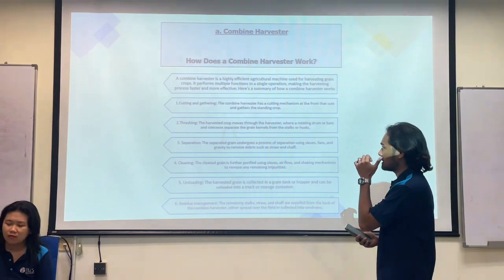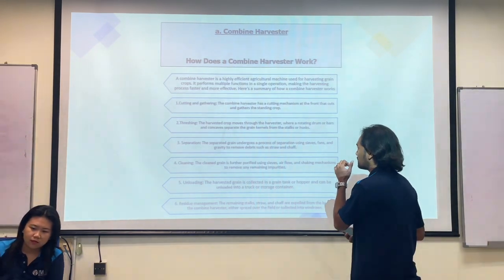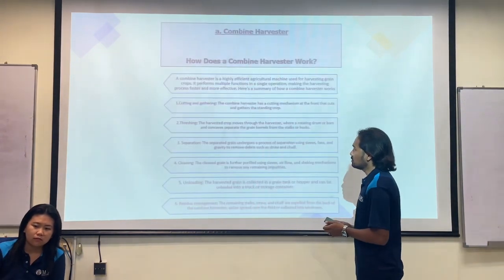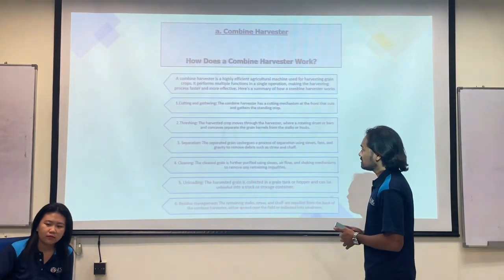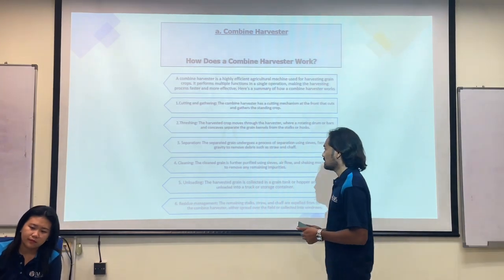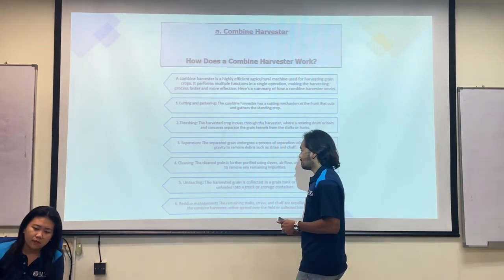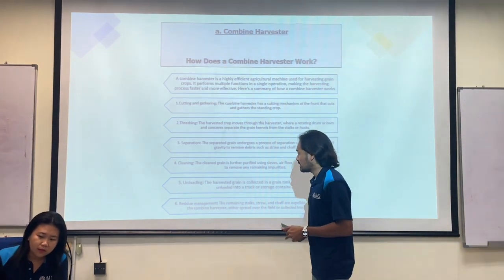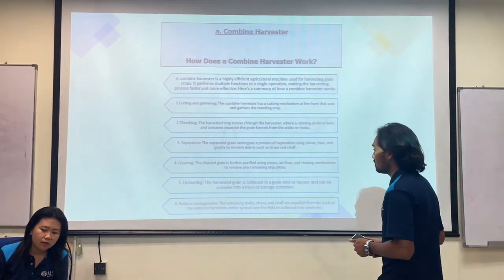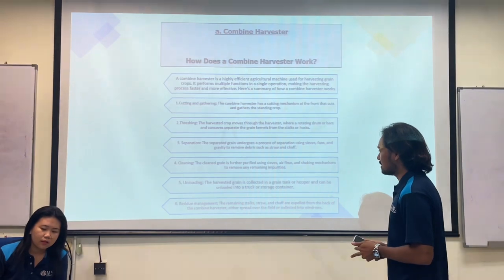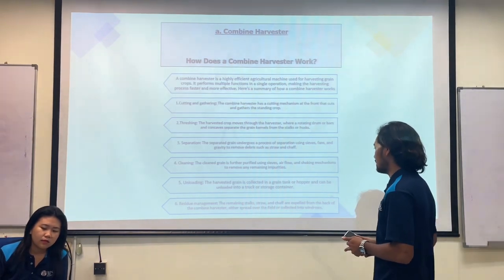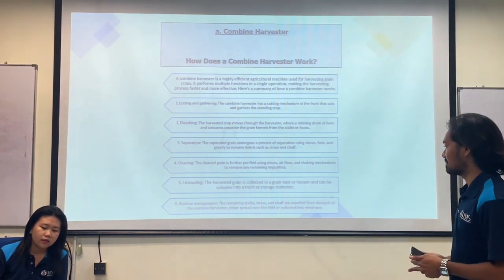The combined harvester works through the following steps: first is cutting and gathering, followed by threshing, then cleaning, then unloading, and lastly residue management.